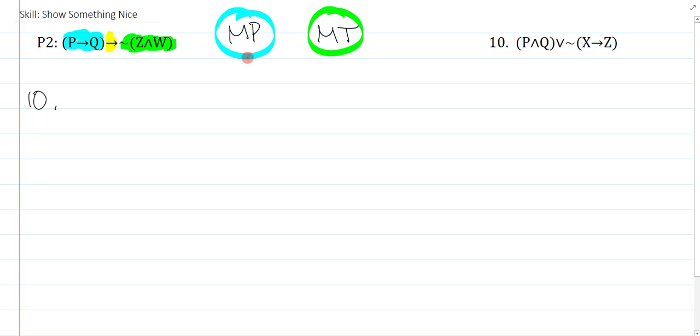So to show something that would facilitate the modus ponens, I only have one option, and that would be I would really like to get or show P arrow Q. Why? Because if I was able to succeed at getting P arrow Q, then I could modus ponens premise two, and that is a really nice move.